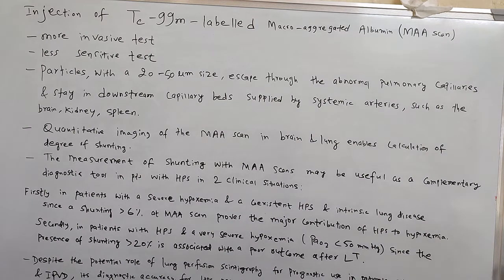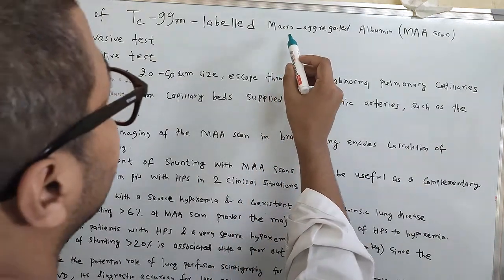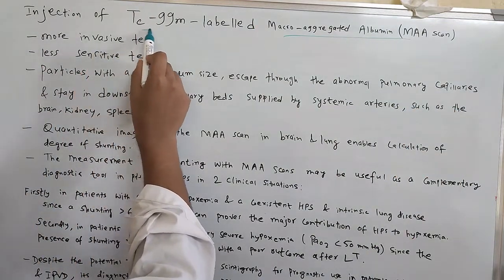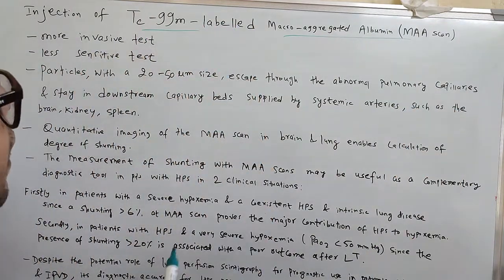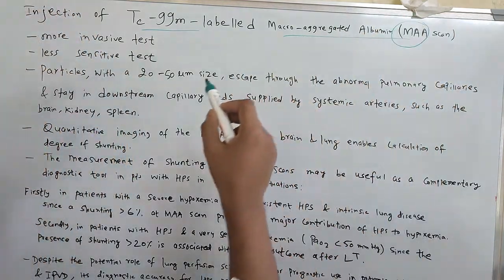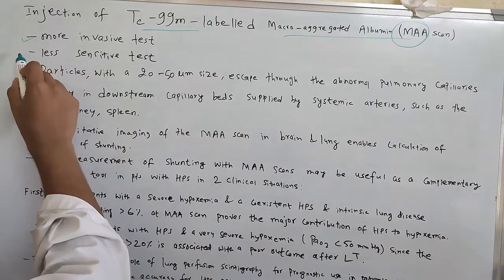The next test is the MAA scan, called macro aggregate albumin scan. Injection of technetium-99m labeled macro albumin scan is abbreviated as MAA scan. This is more invasive but less sensitive test.